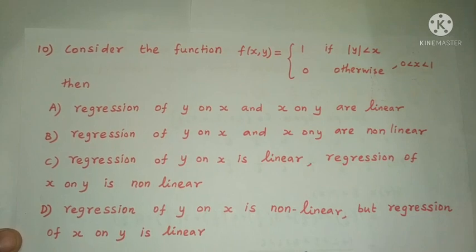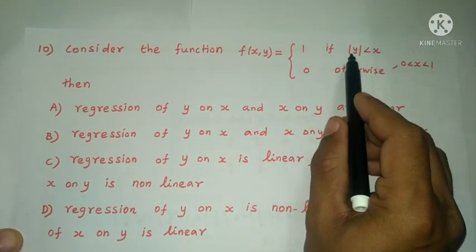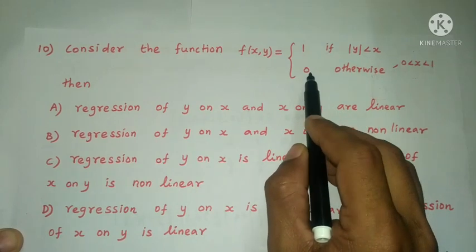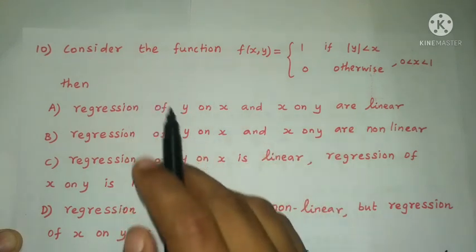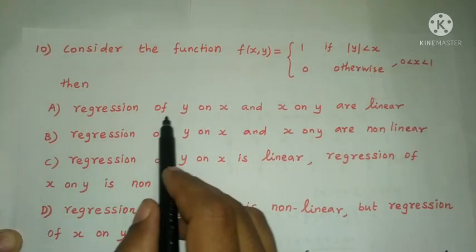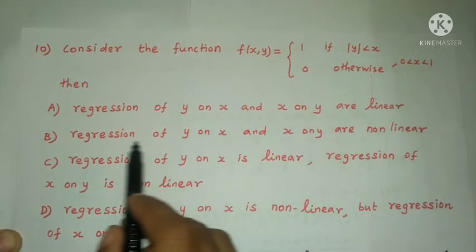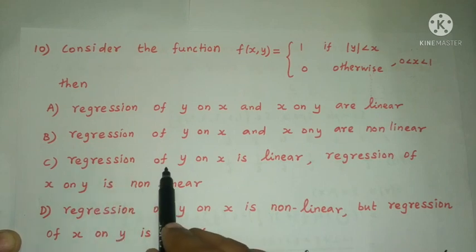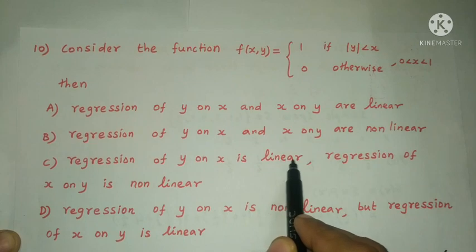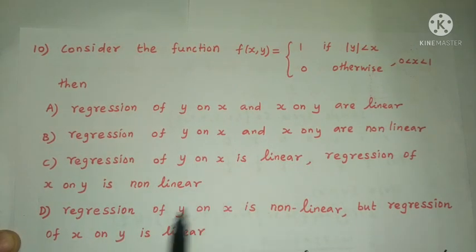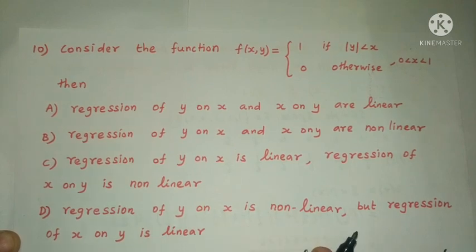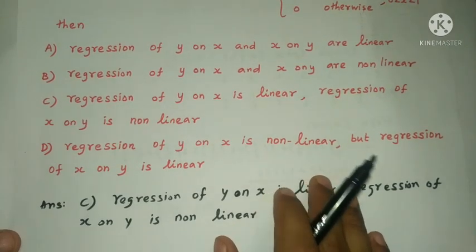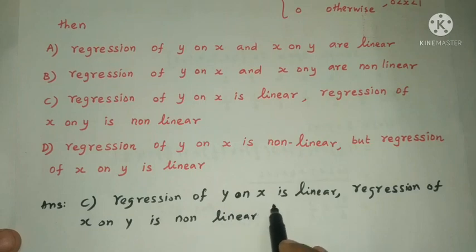Next question: Consider the function f(x, y) = 1 if |y| < x, 0 otherwise, for 0 < x < 1. Options: (A) regression of y on x and x on y are linear, (B) both non-linear, (C) regression of y on x is linear but x on y is non-linear, (D) regression of y on x is non-linear but x on y is linear. The answer is Option C: regression of y on x is linear, regression of x on y is non-linear.